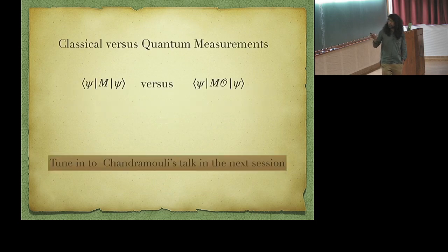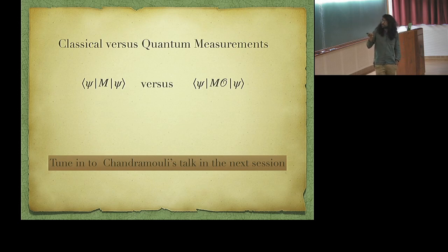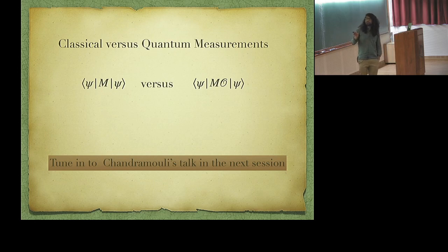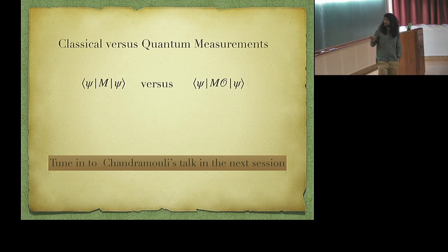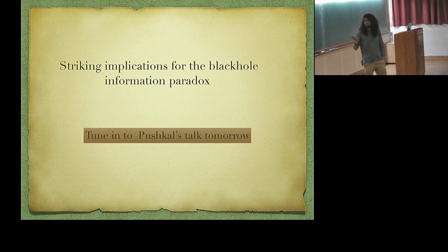One more relevant point: we are allowed to make quantum measurements versus classical measurements. Instead of just measuring things like the mass — the expectation value of some operator — we can measure correlators, and using these we can test how information about excitations can be obtained. For details, please tune in to Chandra's talk in the next session. There are also striking implications for the black hole information paradox that come from this discussion — for details, please tune in to Pushkal's talk tomorrow. Thank you.